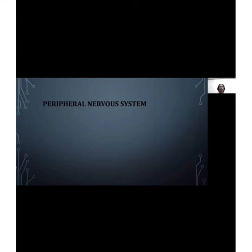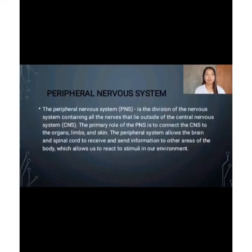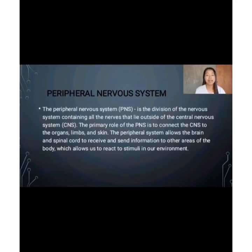Moving on to the peripheral nervous system. Good day everyone. I am Joyce Marie H. Villanueva from BCED 1D. Today I'm going to discuss the peripheral nervous system. The peripheral nervous system is a division of the nervous system containing all the nerves outside the central nervous system. It acts as a messenger that allows the brain and spinal cord to receive and send information from other areas of the body that react to stimuli in our environment.